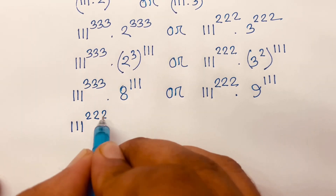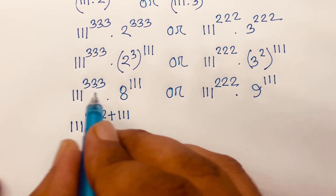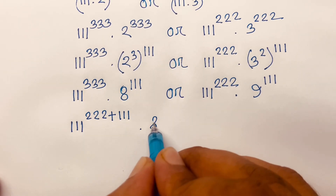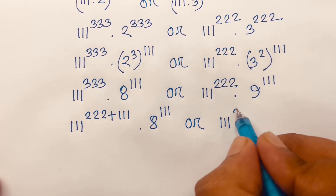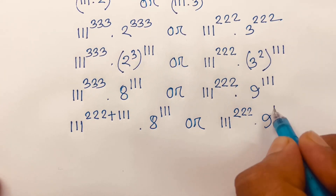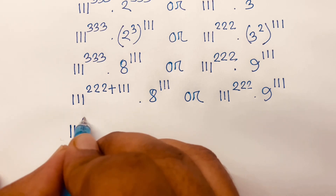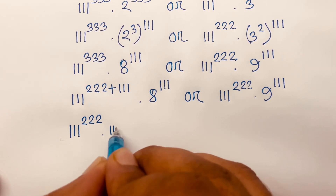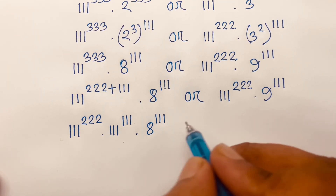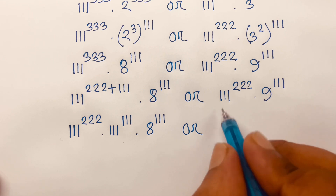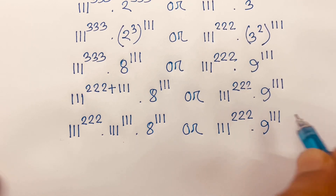Look: 222 plus 111 equals 333. So we have 333 times 8^111. Or in this case, 111^222 times 9^111. Then I can say again: 111^222 times 111^111 times 8^111.